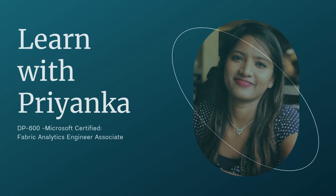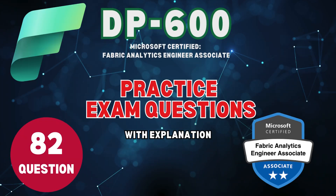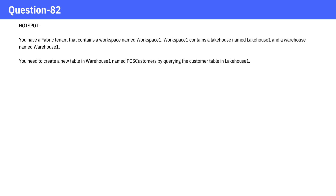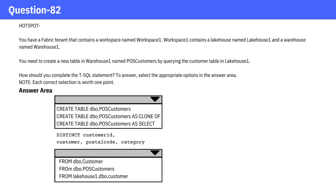Welcome to Learn with Priyanka. Question 82. You have a Fabric tenant that contains a workspace named Workspace 1. Workspace 1 contains a lakehouse named Lakehouse 1 and a warehouse named Warehouse 1. You need to create a new table in Warehouse 1 named POS Customers by querying the customer table in Lakehouse 1. How should you complete the T-SQL statement?